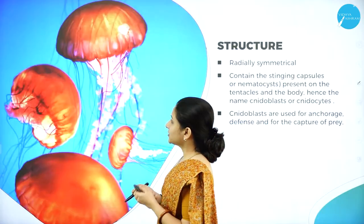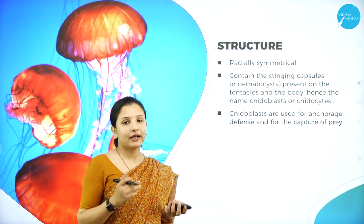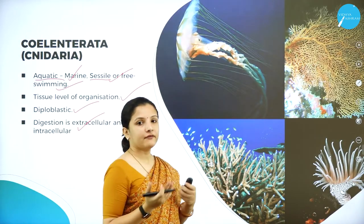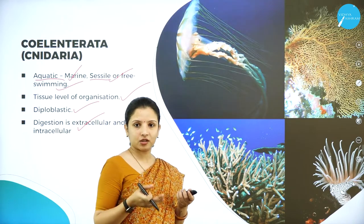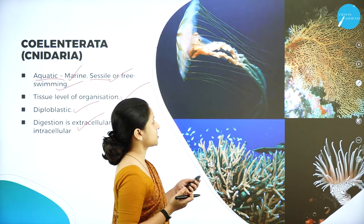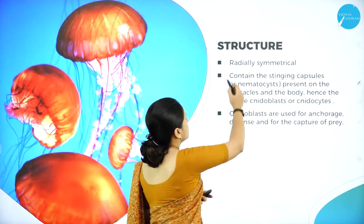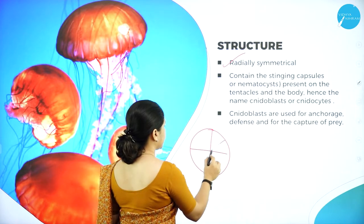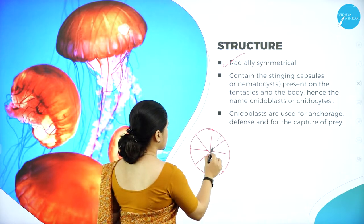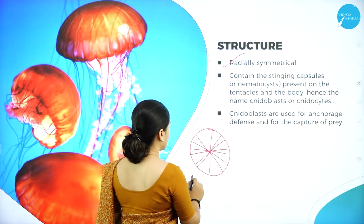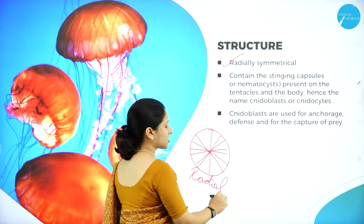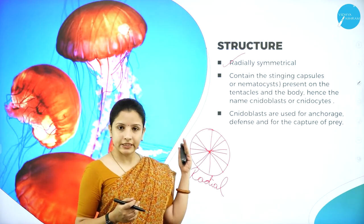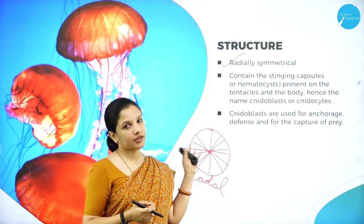Next, moving on to the structure. They are radially symmetrical - meaning any angle you cut them, they will look similar to each other. That is radially symmetrical, as I have explained in the previous session. Any number of planes you cut them, they will look similar to each other - that is radial symmetry. Phylum Porifera was asymmetrical, while phylum Cnidaria or Coelenterata have radial symmetry.